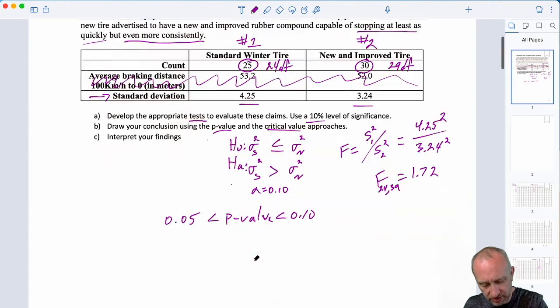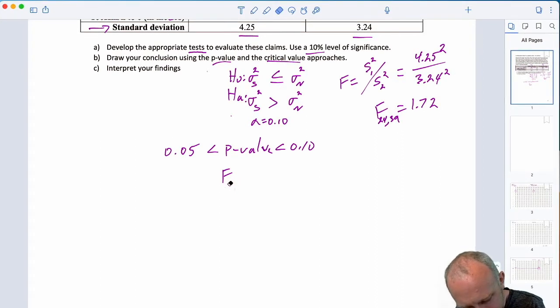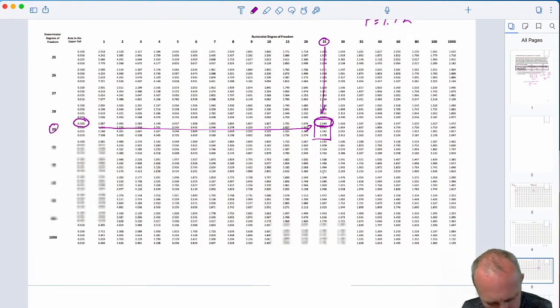Okay. So, we have our critical at 24 and 39. Let's write it like this, actually. This will make it a little bit easier because here I can write the level of significance. Here I can write those degrees of freedom and that was 1.64 if I remember correctly.